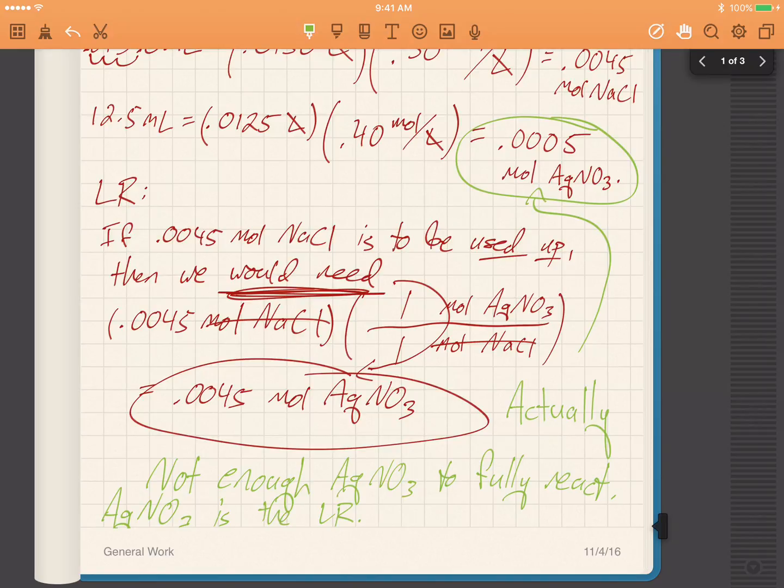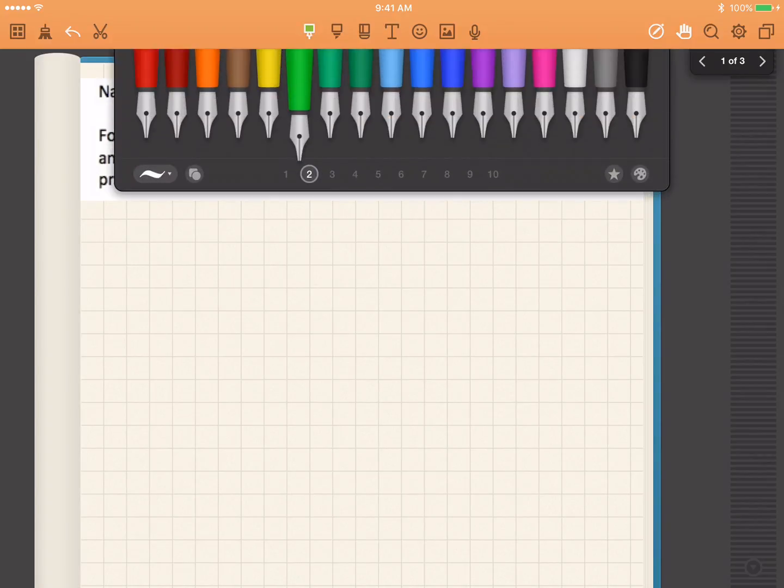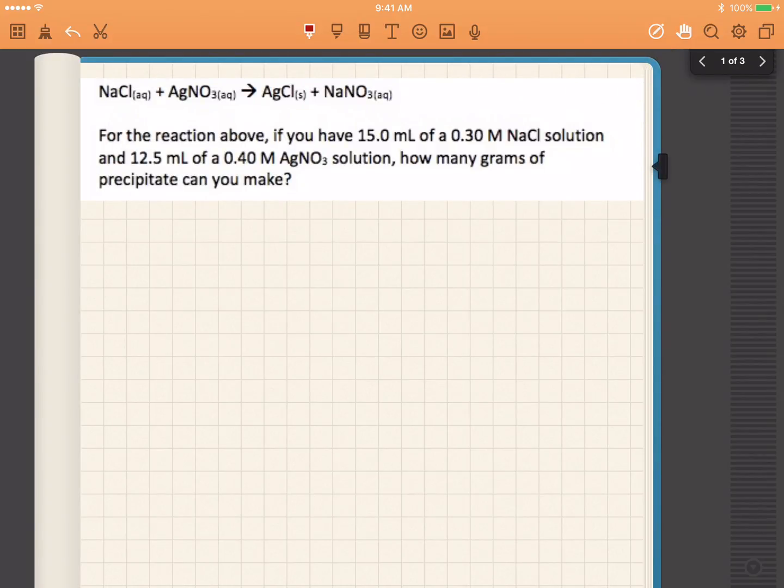So now that we know that AgNO₃ is the limiting reactant, we can clear up the page and solve the rest of the problem. How many grams of precipitate can we make? Well, remember, how many moles of AgNO₃ did we have? It was 0.0005 moles of AgNO₃.